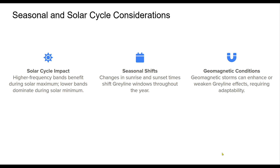Gray line propagation is influenced by both seasonal variations and the solar cycle. During solar maximum, higher frequency bands like 15 and 10 meters experience enhanced conditions, while solar minimum favors lower bands. Additionally, seasonal changes in sunrise and sunset timings shift the gray line window, necessitating adjustment in operating schedules. Geomagnetic disturbances can further alter propagation, either boosting or hindering conditions.